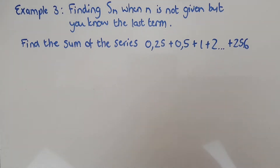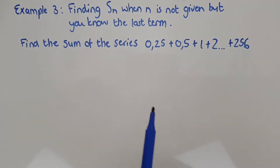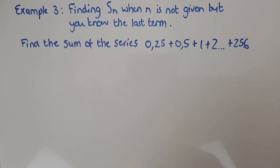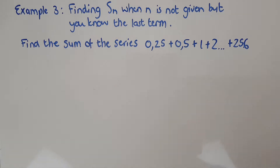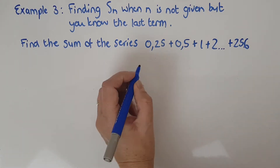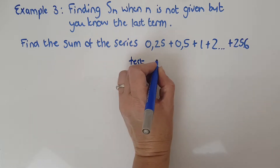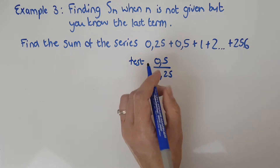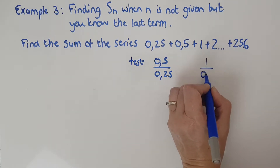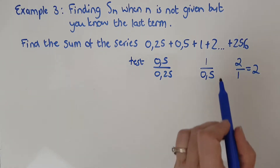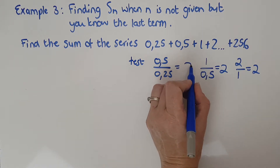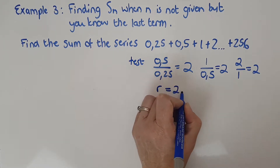This example is when you've got to find the sum but it's not given — you know the last term. I've put the heading as geometric, so it is geometric. You can probably see it's doubling every time, like a 2 to the n. Let's be certain and test: 0.5 divided by 0.25 is 2, 1 divided by 0.5 is 2, and 2 divided by 1 is 2. So clearly r equals 2 — it is a geometric series.